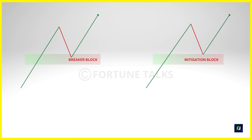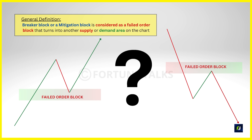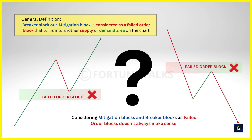The market could ignore an order block supply and demand for many reasons — a shift in market structure, price being overvalued or undervalued, or price tapping into higher timeframe key levels. When a valid demand level fails to reject price and price breaks through, it becomes a supply level. However, considering Mitigation Blocks and Breaker Blocks as failed order blocks doesn't always make sense.